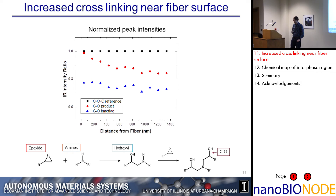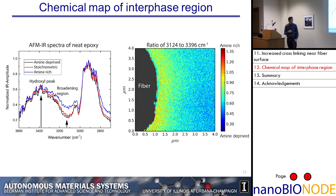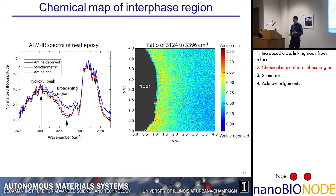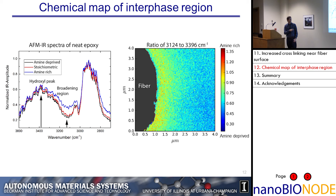The other type of measurement performed here is chemical mapping in the high wave number region. I've prepared a few samples that all have different known stoichiometries. Collecting a chemical spectrum for each, we see that in an amine-rich epoxy system — where you have more of the hardener component — we get hydroxyl peak broadening in the spectra. Taking a ratio of the hydroxyl peak to a point on the side of the hydroxyl peak to characterize the broadening, and converting that into a map, we see an increase that can be attributed to an amine-rich region near the fiber surface.